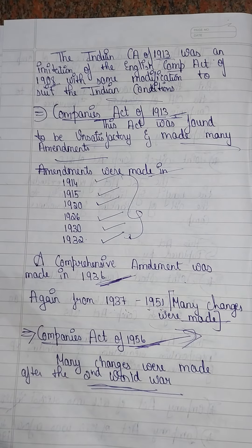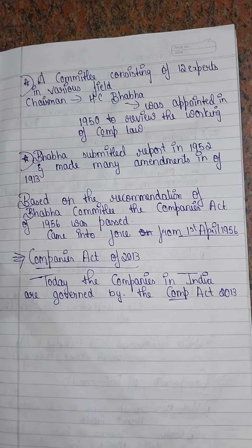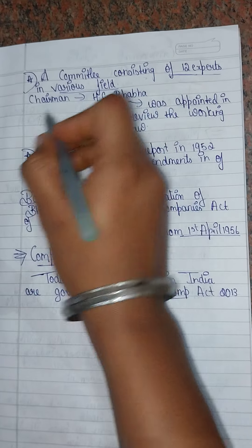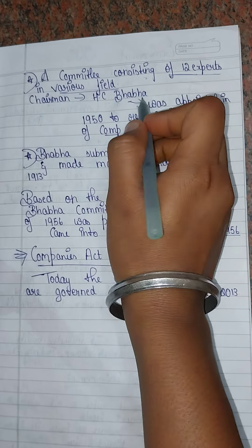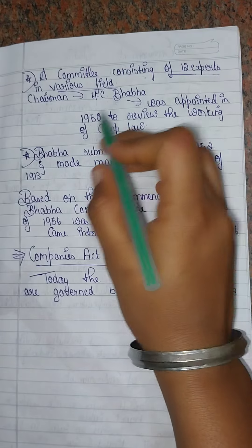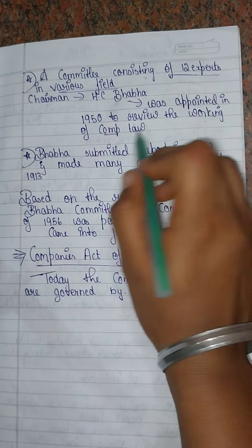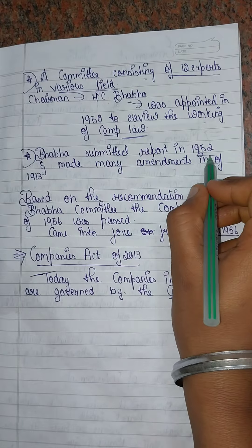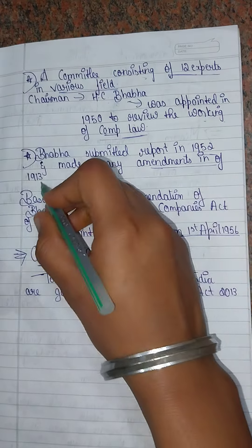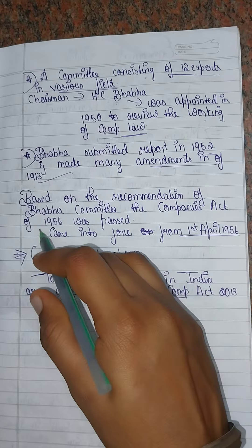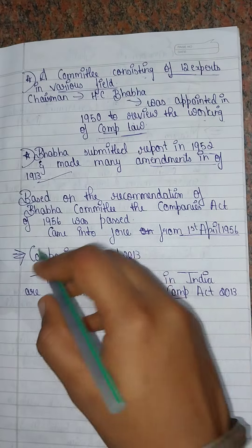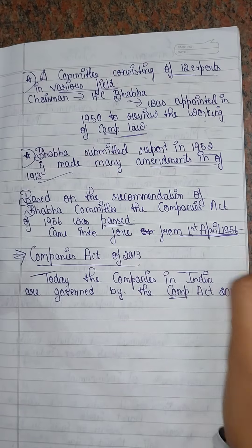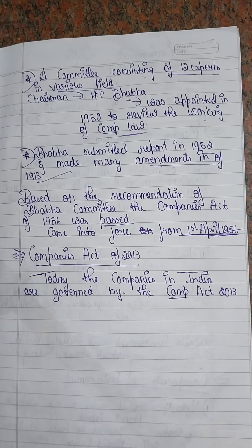A committee consisting of 12 experts in various fields, chaired by H.C. Bhabha, was appointed in 1950 to review the working of company law. Bhabha submitted the report in 1952. Based on the recommendations of the Bhabha Committee, the Companies Act 1956 was passed and came into force on 1st April 1956.